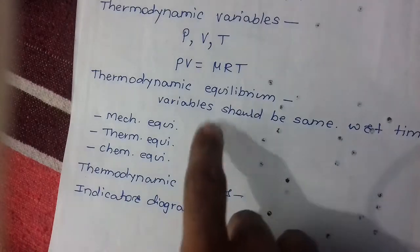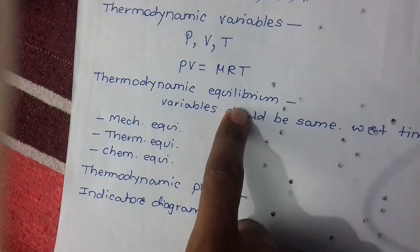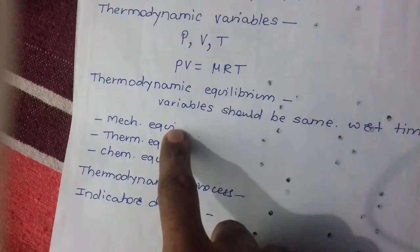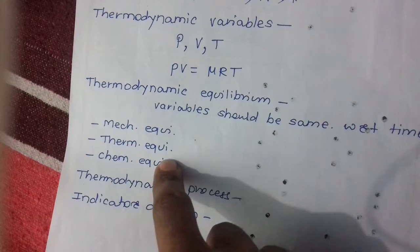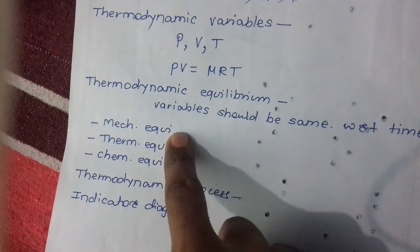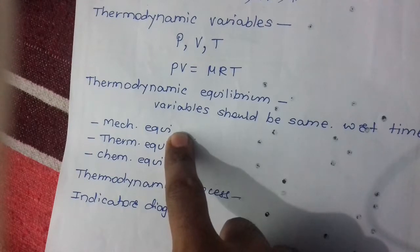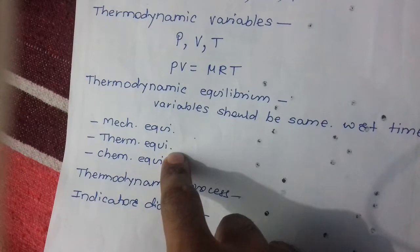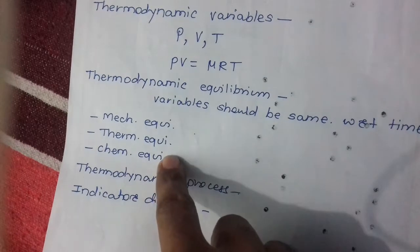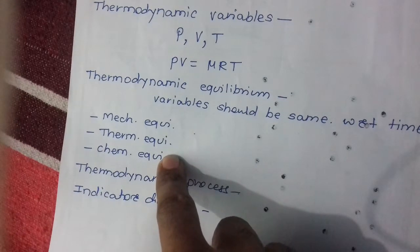Thermodynamic equilibrium consists of three types: mechanical equilibrium (all forces and torques are zero), thermal equilibrium (temperature is the same throughout), and chemical equilibrium (chemical composition is the same).